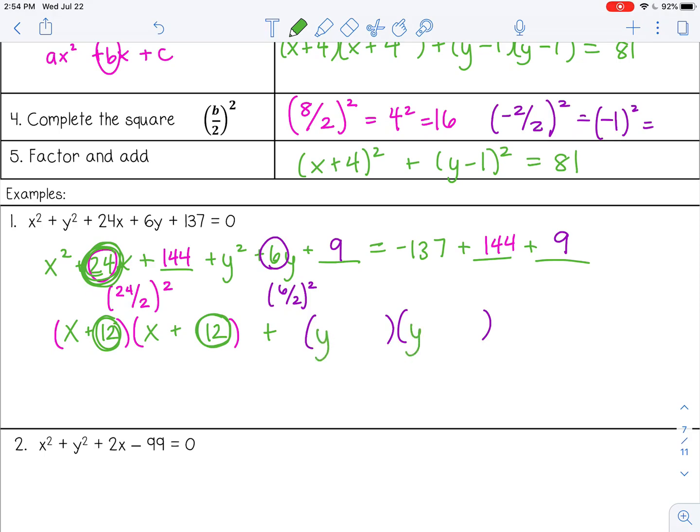So let's try it over here. Y and y. Half of 6 is positive 3. You do need to look at the sign, so if it was negative 6, it would be negative 3. Let's make sure that works: 3 times 3 is 9, 3 plus 3 is 6. That works. Let's add on the right-hand side. So negative 137 plus 144 plus 9, that gives me 16. So my final answer would be x plus 12 squared plus y plus 3 squared equals 16.